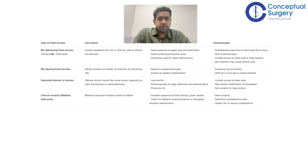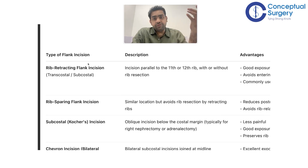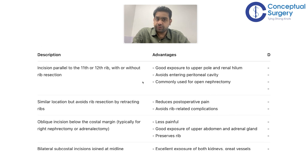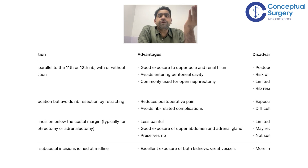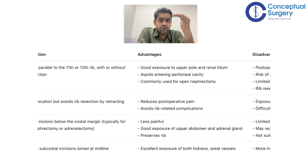In the rib-cutting flank incision, you cut the 12th rib. The incision is parallel to the 11th or 12th rib with resection of the rib. Many surgeons prefer a 12th rib approach by making an incision over the 12th rib and resecting the anterior part — this offers better access. The rib-cutting incision gives good exposure to the upper pole of the kidney and the renal hilum. It is used when the pathology is near the upper pole, such as an upper pole tumor, requiring proper dissection.